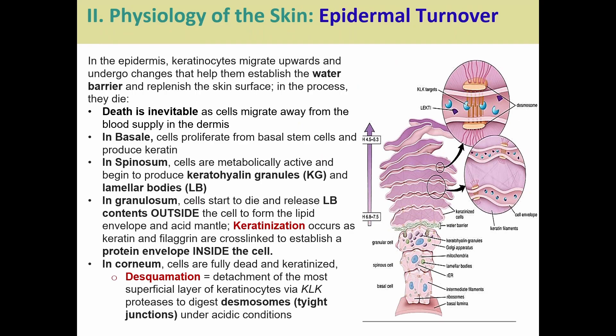Let's talk about how cells move from the basal layer all the way up. These keratinocytes migrate from that bottom layer all the way up to the surface. As they move up, they go through changes that help maintain that watertight barrier and replenish the skin. It's on the outside of your body, facing all the elements — these cells have to be tough and replaceable. Death is inevitable, because as the cells move away from the dermis, away from that basal layer, there's no blood supply.